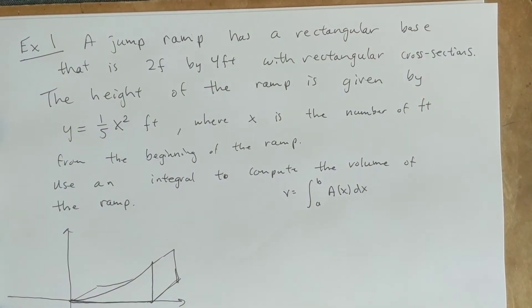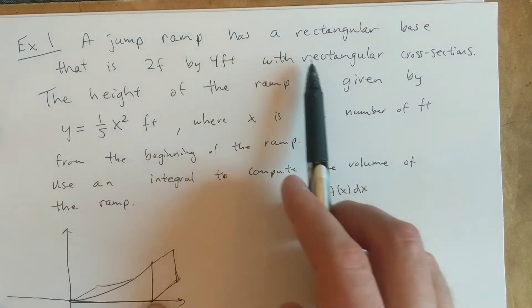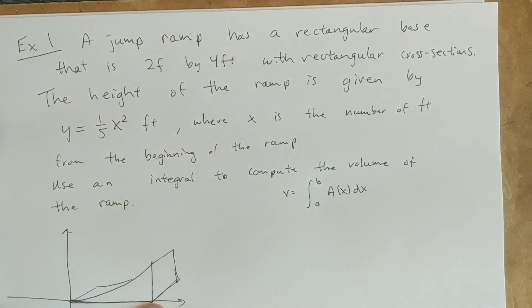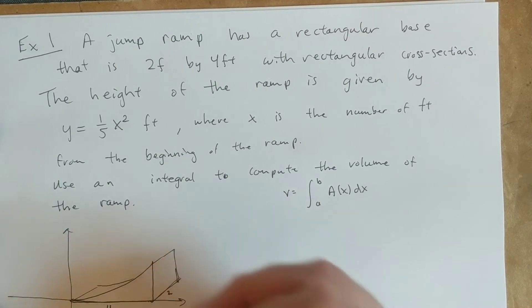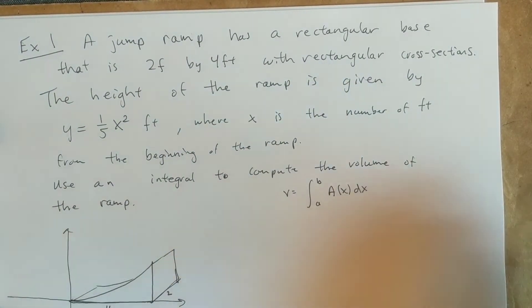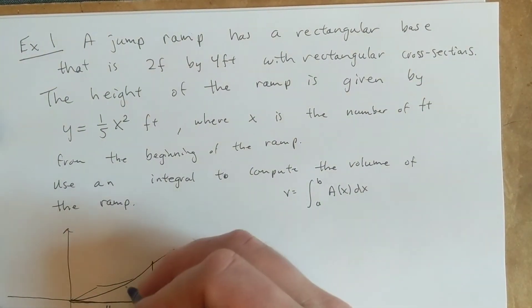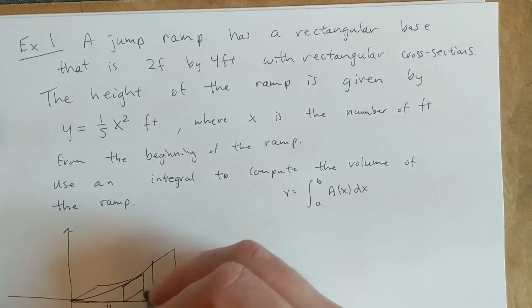Okay, so in this example, we want to compute the volume of a jump ramp. So I've drawn a picture of what it looks like. A jump ramp has a rectangular base of two by four, so this width is two, and this width is four, with rectangular cross-sections.